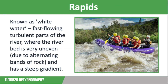We're going to move on to one of the lesser understood parts of the upper course, which is rapids. Rapids are known as white water and are fast-flowing, turbulent parts of the river where the riverbed is very uneven and has a steep gradient.